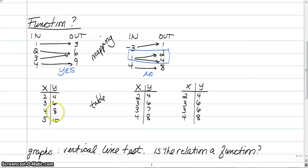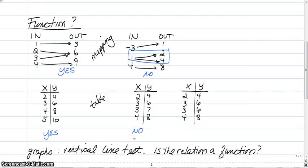Now let's look at the tables. First table: 2→4, 3→6, 4→8, 5→10 — that's a function, no problem. Second table: 2→4, 3→6, then 3→7 — wait, 3 was supposed to give us 6, so this is not a function. Third table: 2→4, 3→6, 3→6 again, then 4→8 — that's fine, same input same output. This one is a function. Remember, each input is only allowed one output.